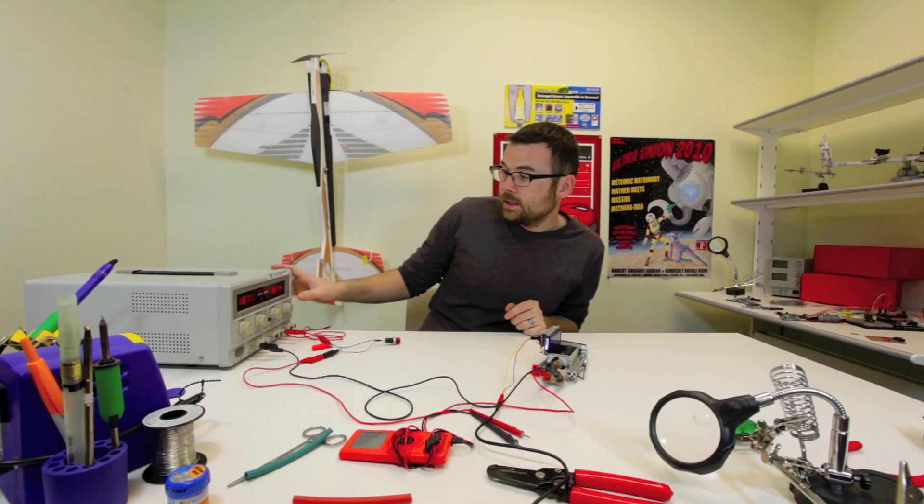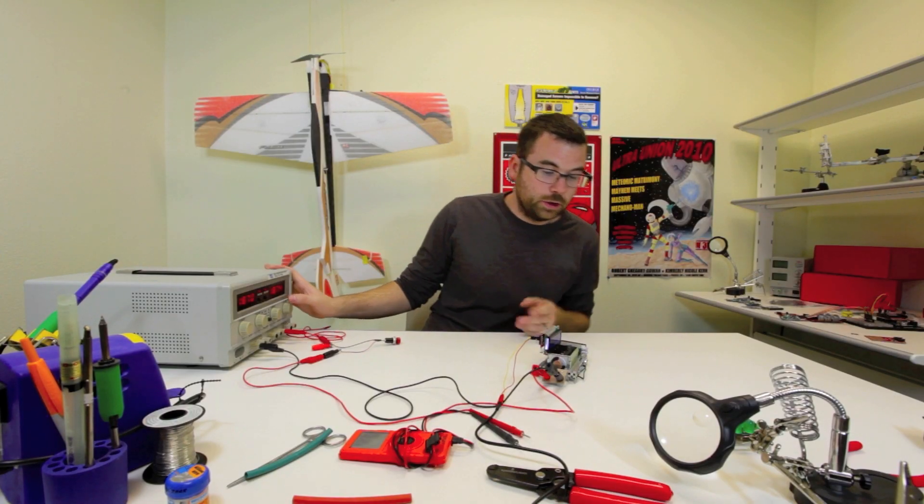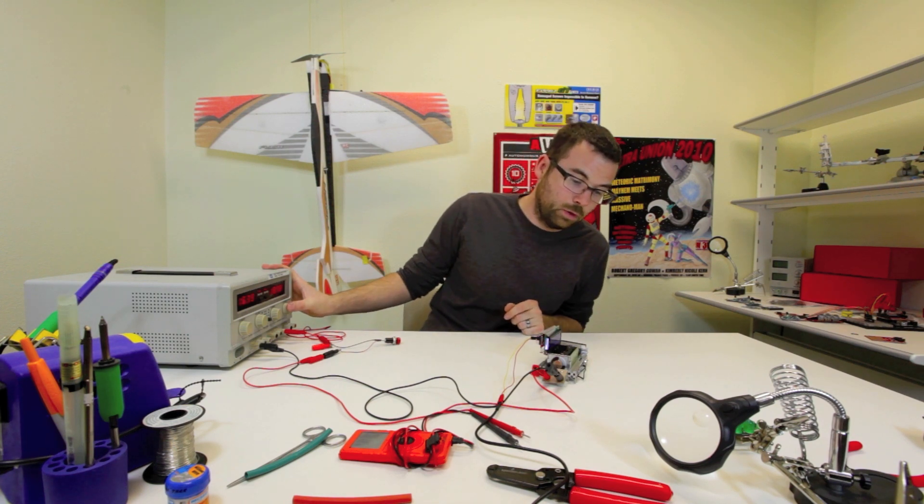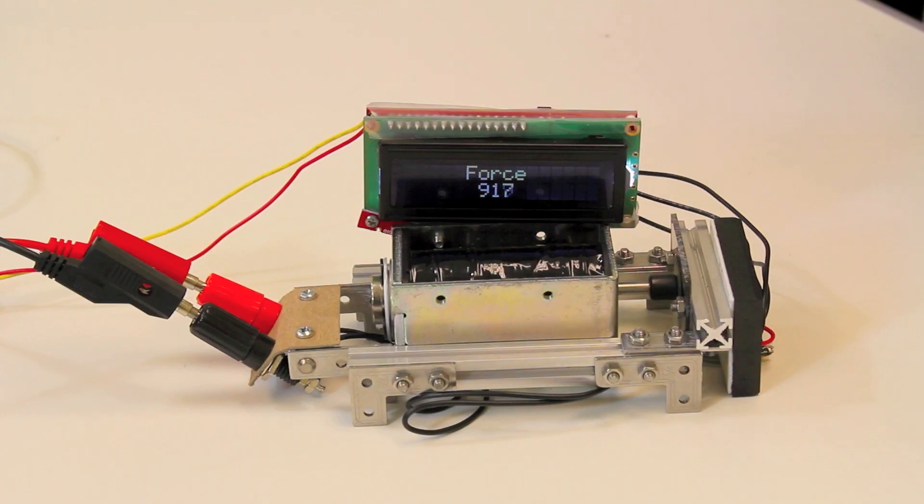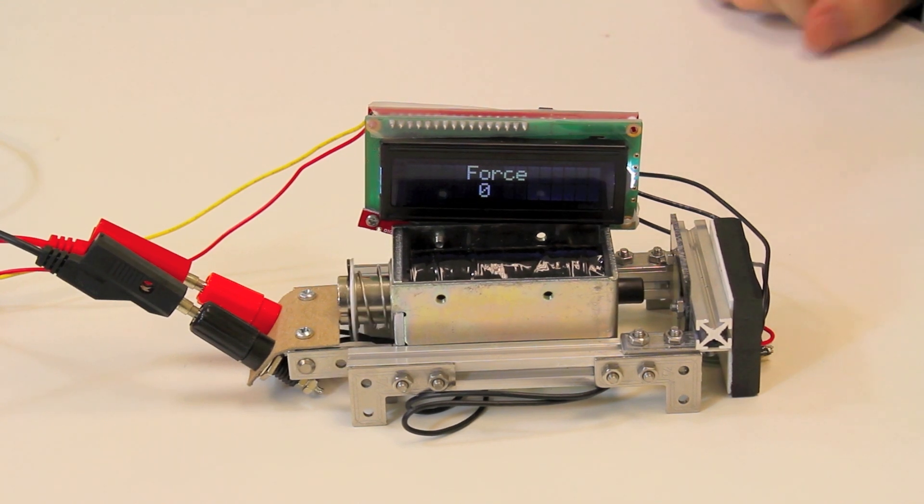And if we activate this and then just slowly turn down the voltage, you can see the force on the meters going down proportionally as well. As we keep going down and then finally hit 5 volts, it will actually disengage. So pretty nifty.